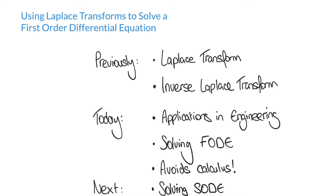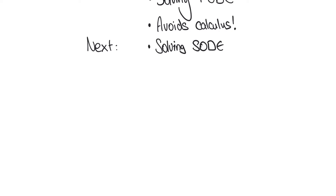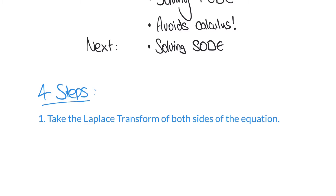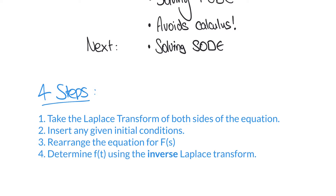Before we begin, we're going to list four steps that we're going to follow with this particular problem and with any given problem that we're going to solve using Laplace transforms. Step one is to take the Laplace transform of both sides of the equation. Step two is to insert any given initial conditions. Step three, we're going to rearrange the equation for F of s.